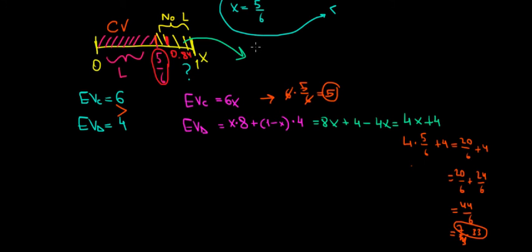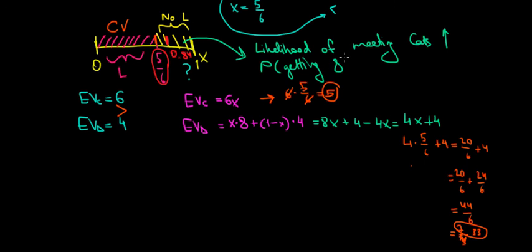Likelihood of meeting cats is higher here. Meaning that there is a higher probability of getting 8 units of value. And that's why dogs are better off on this range. Hope this makes sense.